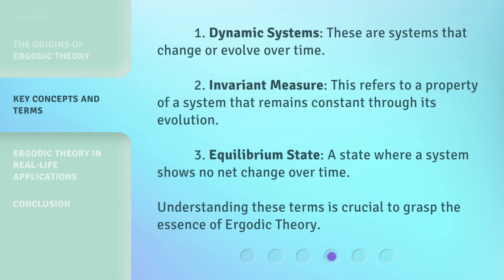Key concepts and terms: 1. Dynamic Systems — these are systems that change or evolve over time. 2. Invariant Measure — this refers to a property of a system that remains constant through its evolution. 3. Equilibrium State — a state where a system shows no net change over time. Understanding these terms is crucial to grasp the essence of Ergodic Theory.